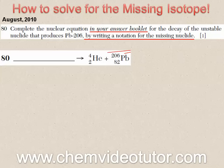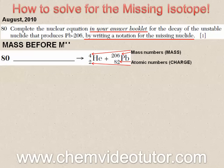In order to do this, you should know that the numbers on the top are called mass numbers representing the mass, and the numbers on the bottom are called atomic numbers representing the charge. This is important because the mass before must equal the mass after, which means that 4 plus 206 must equal 210 on the other side or before the arrow.